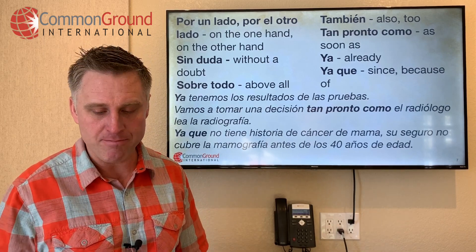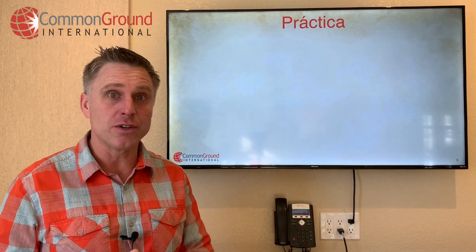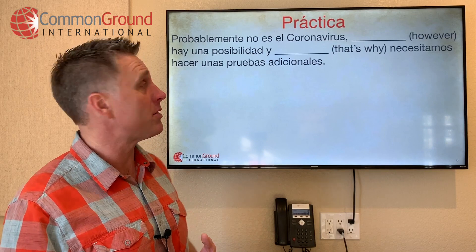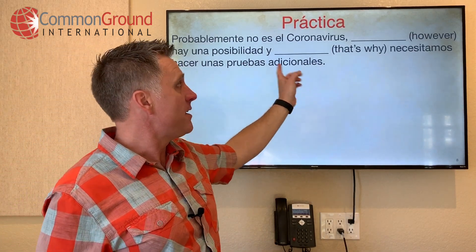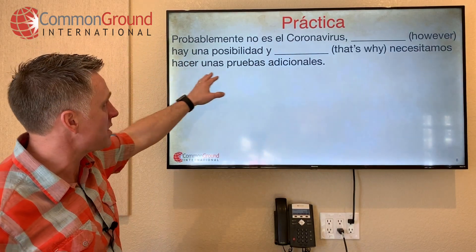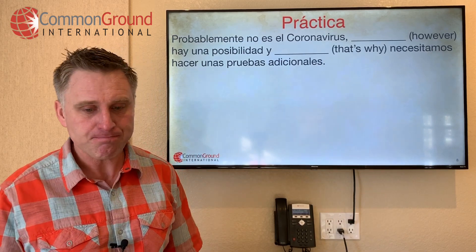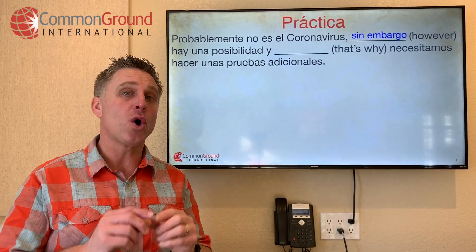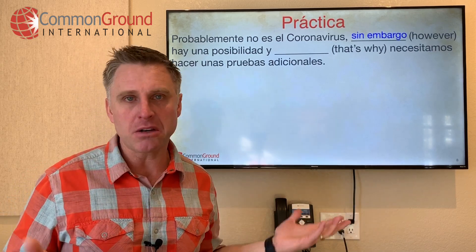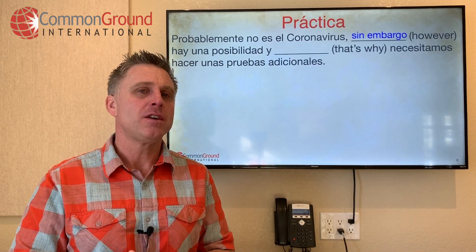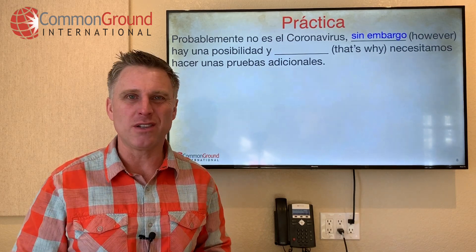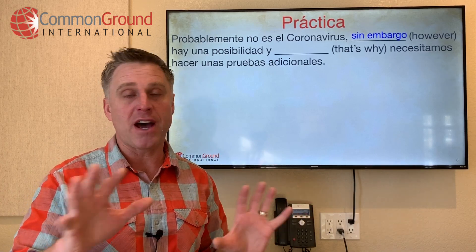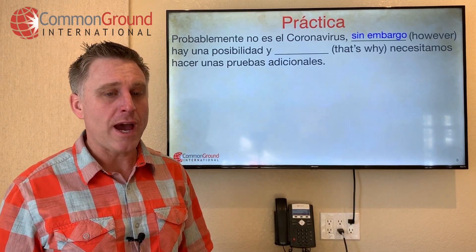Let's do a little práctica. Feel free to pause. Probablemente no es el coronavirus — probably it's not coronavirus — however, hay una posibilidad, and that's why necesitamos hacer unas pruebas adicionales. How do you say 'however'? I chose sin embargo. No obstante is another option, but sin embargo is the one I tend to use. That's what you should do — if there are synonyms, choose the one you like. Be able to recognize the other, but you don't need five ways to say something; stick with one, particularly as you're starting out. How do you say 'that's why'? Por eso — por eso necesitamos hacer unas pruebas adicionales.